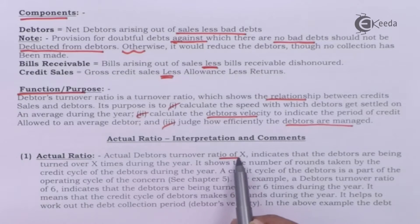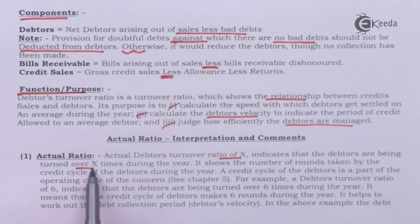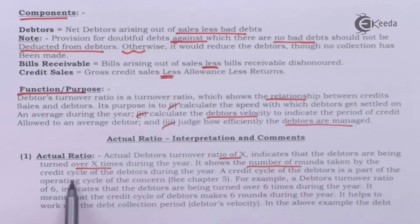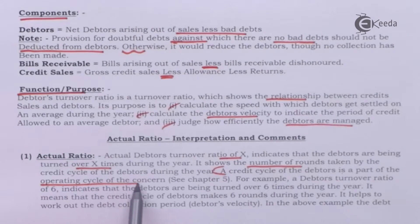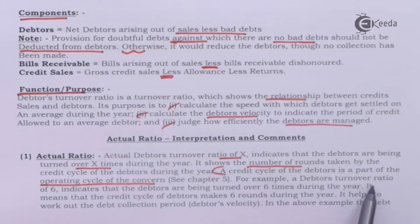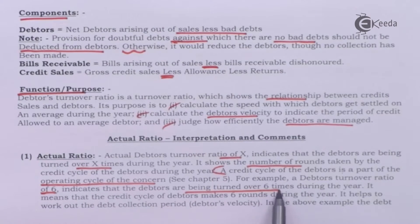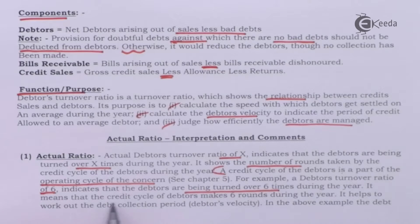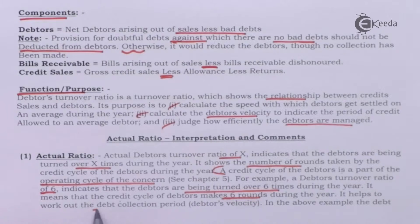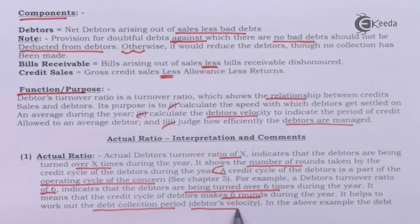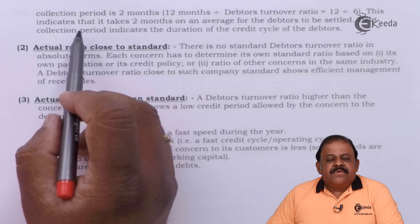For actual ratio interpretation: a debtors turnover ratio of X indicates that debtors are being turned over X times during the year. It shows the number of rounds taken by the credit cycle of debtors during the year. A credit cycle of debtors is a part of the operating cycle of the concern. For example, a debtors turnover ratio of 6 indicates that debtors are being turned over 6 times during the year, meaning the credit cycle of debtors makes 6 rounds during the year.